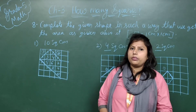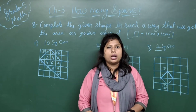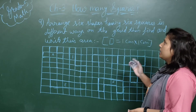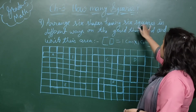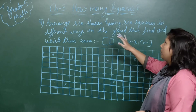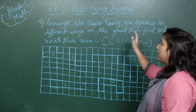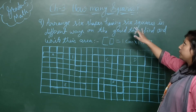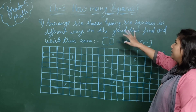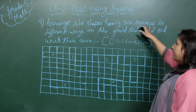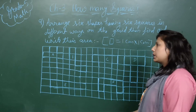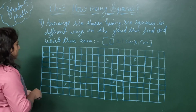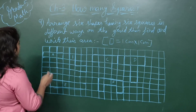So students, this is the way you have to solve in your workbook. Now see question number 9: arrange 6 shapes having 6 squares in different ways on the grid, then find the area. Since you are finding area using 6 squares, the area will always be 6 square centimeters — every shape has 6 squares as its area.